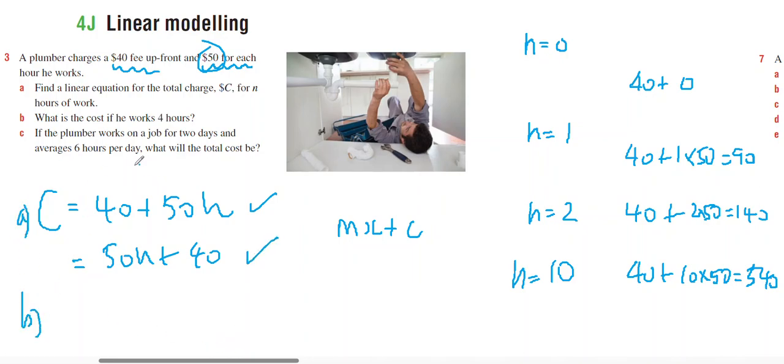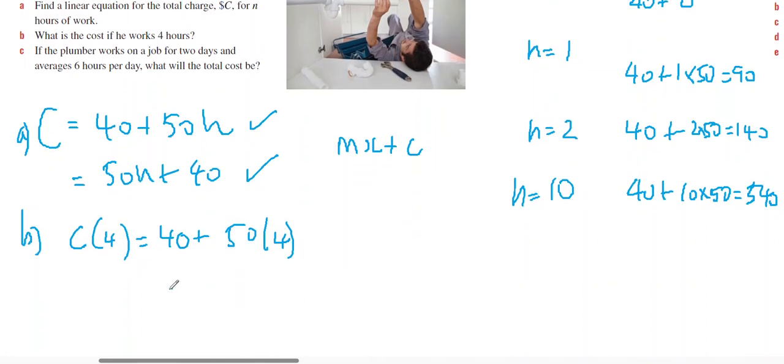Part B, what's the cost if you work for four hours? The cost of four hours will be 40 plus 50 times 4. 50 times 4 is 200, so 40 plus 200, $240 for four hours.